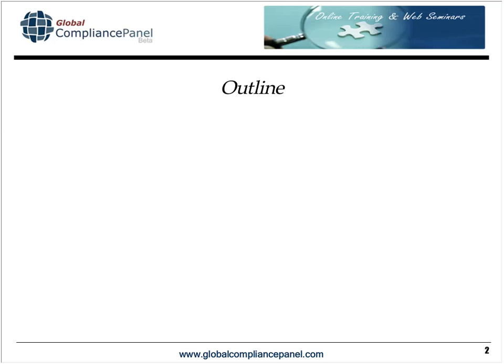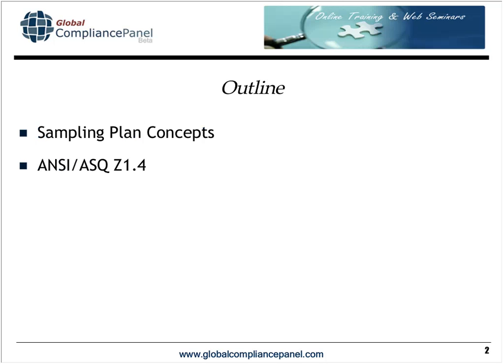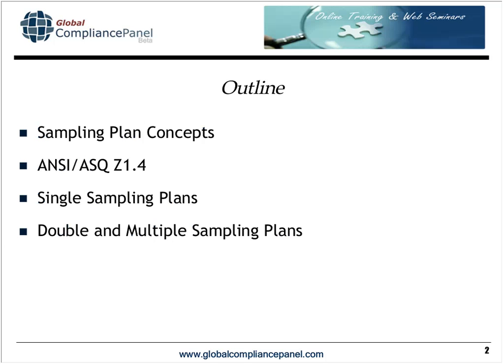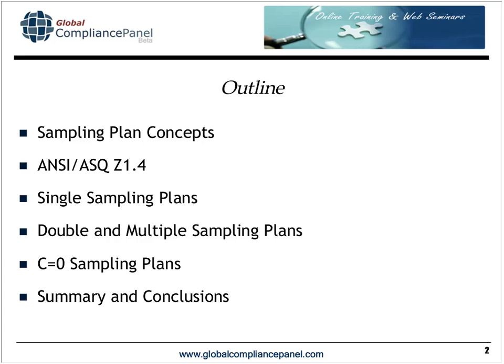Here's the material we're going to talk about. We'll start with the concept of sampling plans, then look at ANSI ASQ Z1.4 — its history and how to use it. We'll look at single sampling plans, double and multiple sampling plans, and the so-called C equals zero sampling plans. We'll explain why they're popular and what you need to be aware of if you utilize them. Then we'll move to summary and conclusions and open it up for questions.